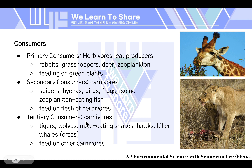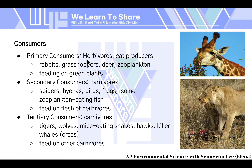Tertiary consumers are also carnivores, but a level above secondary consumers because they feed on other carnivores. Examples include tigers, wolves, mice-eating snakes, hawks, and killer whales or orcas. To review: primary consumers are herbivores that eat producers; secondary consumers are carnivores that feed on herbivores like hyenas, birds, and fish; tertiary consumers are also carnivores but eat other carnivores, like tigers, wolves, and snakes.